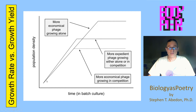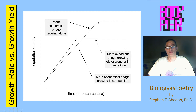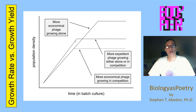What we have is an organism that is more economical and as a consequence is able to more efficiently utilize its resources, converting them into more progeny overall. It does this, however, at the expense of its growth rate, which is slower than the more expedient organism, which is shown over here.